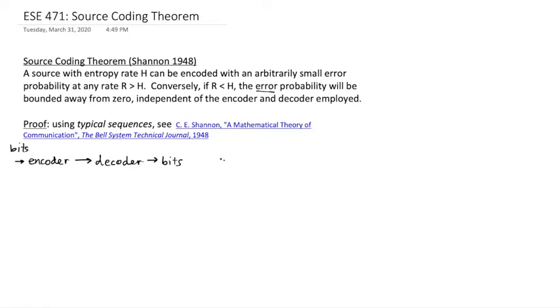An error is whenever these bits don't match with these bits, and the error rate or error probability would be the probability that any particular bit doesn't match. That's what we mean when we say error probability.